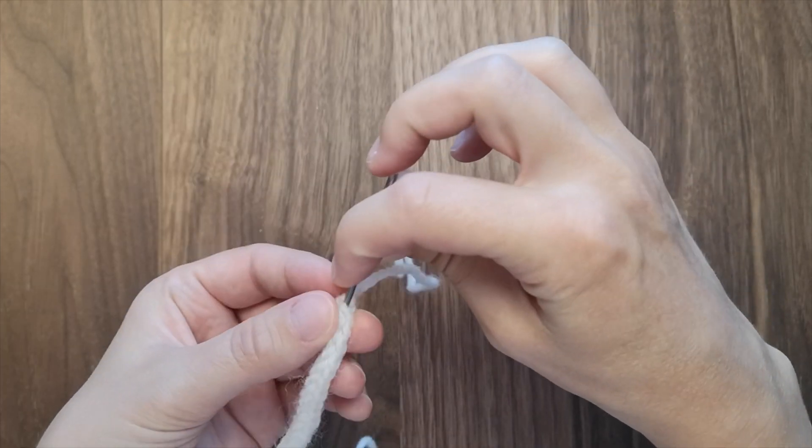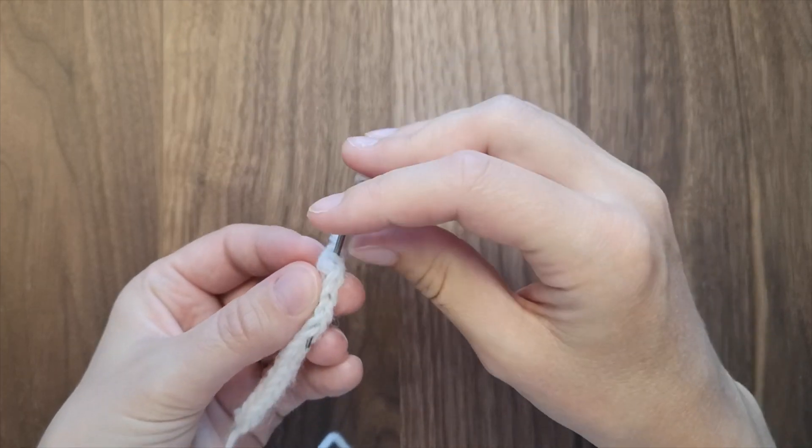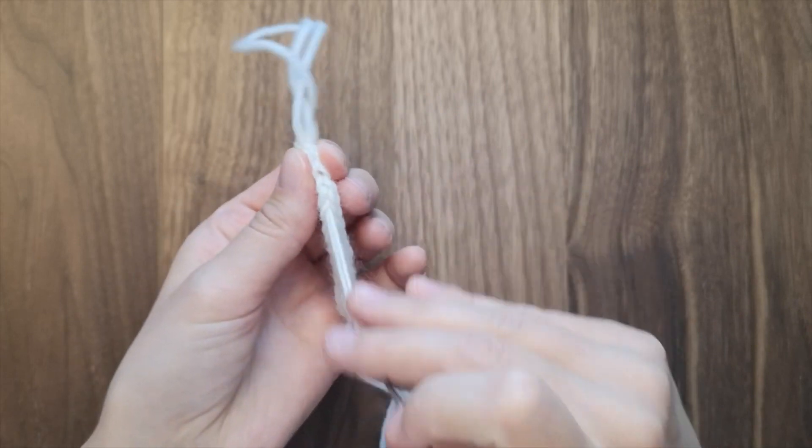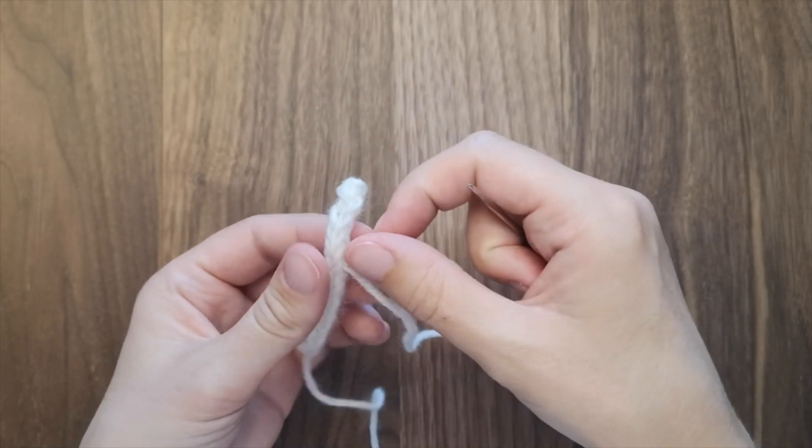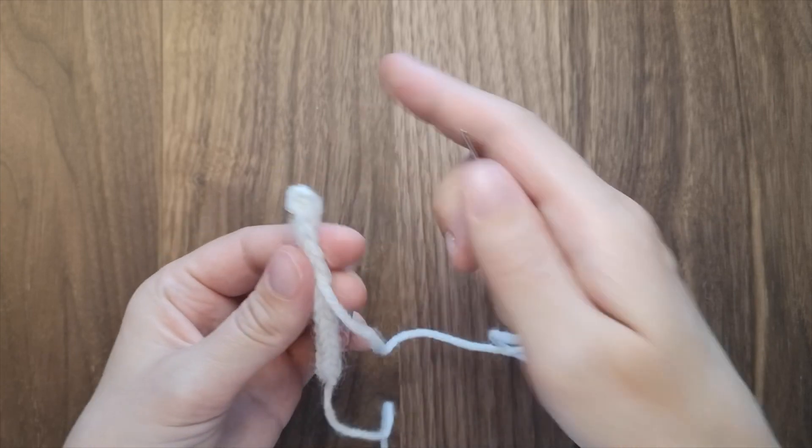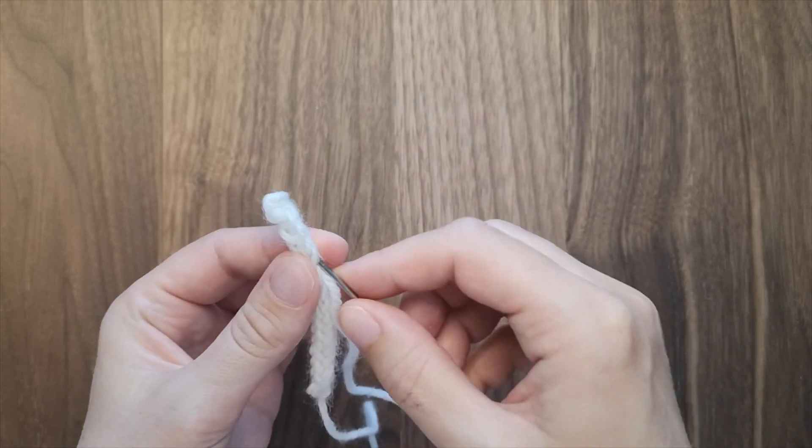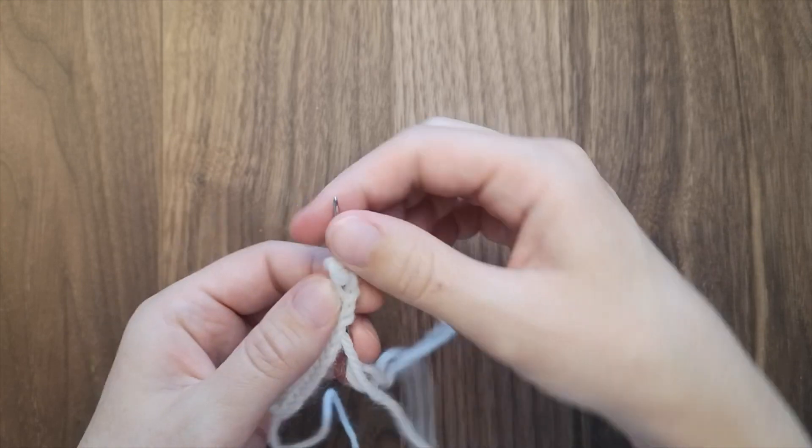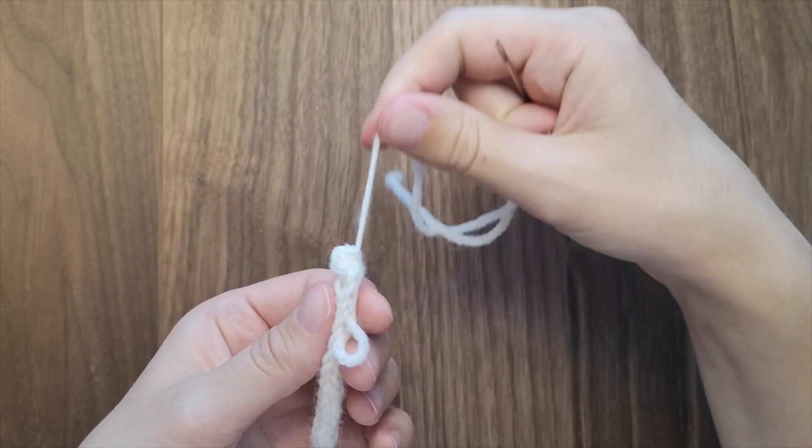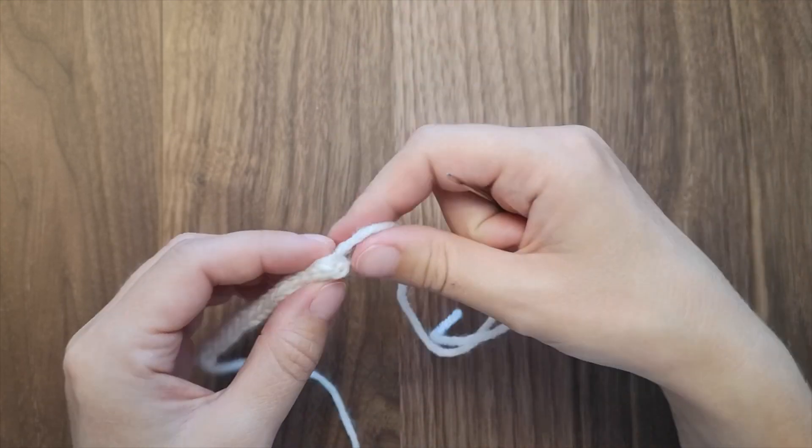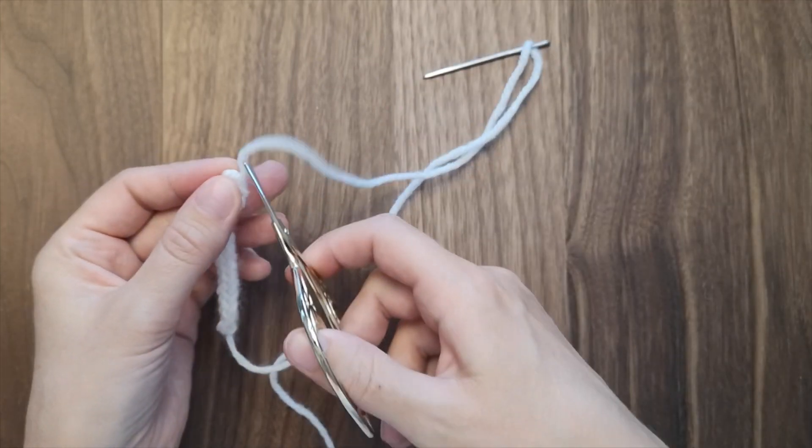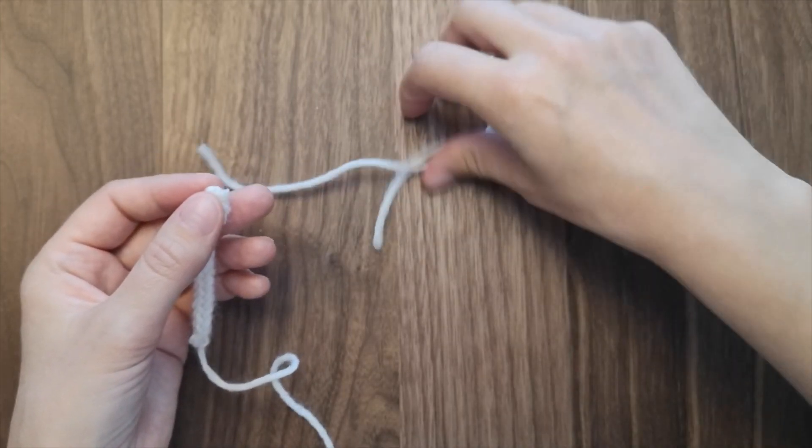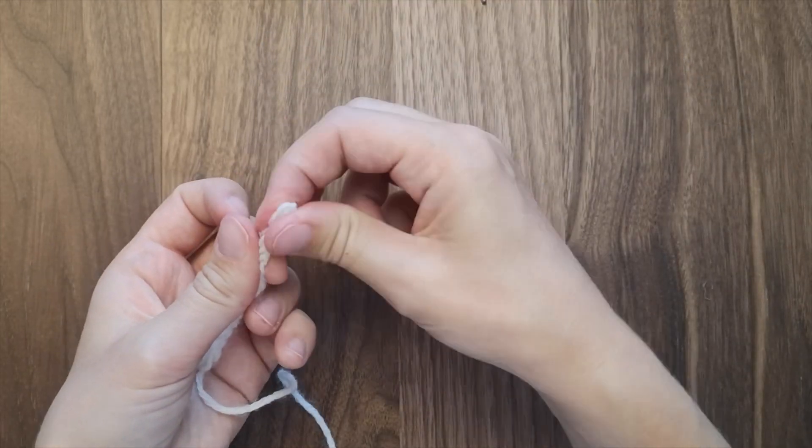I use the needle to fasten the thread by going back and forth inside the cord. Then I cut my little yarn tail and pull slightly in the I-cord so the tail is hidden inside the I-cord and is no longer visible from the outside.